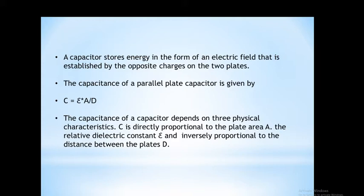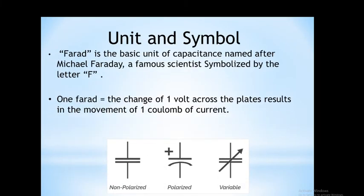The capacitance of a capacitor is given by C equals epsilon into A by D, where epsilon is the permittivity of the material. The value of permittivity changes from material to material, which is filled between the two conducting plates. A is the area of the conducting plates and D is the distance between them. Hence, capacitance is directly proportional to permittivity and area of the conducting plate and inversely proportional to the distance between the two plates.